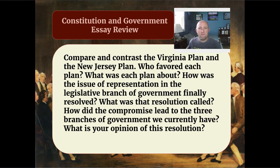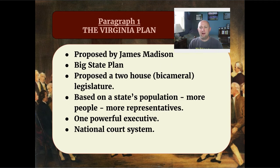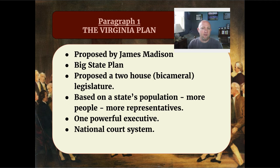Let's start with the first part of the question, which will be the first paragraph of your answer, having to do with the Virginia Plan. The first thing you need to know is it was proposed by James Madison, also known as the father of the Constitution. He came to the Constitutional Convention with a great many ideas. Since he was from Virginia, which was a large state, he wanted to come up with a plan that favored his home state. So the Virginia Plan is also known as the big state plan.